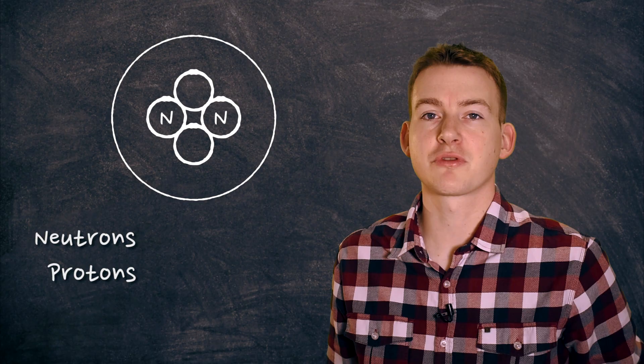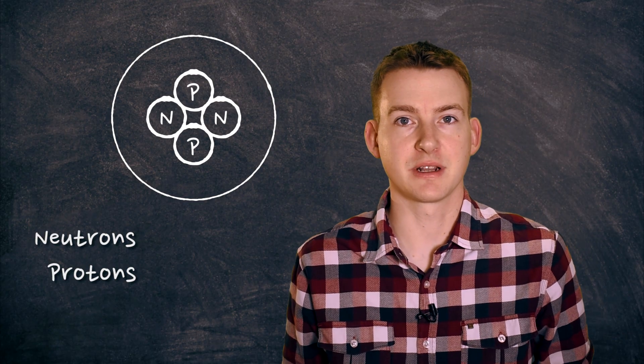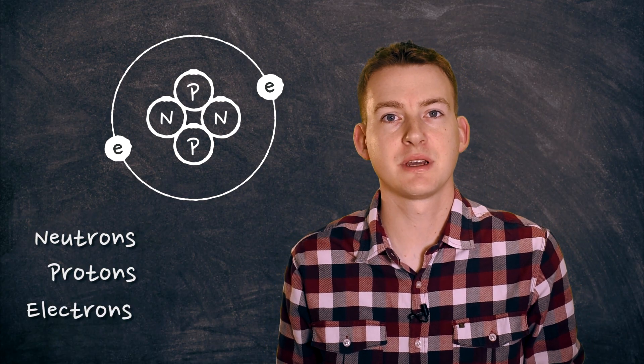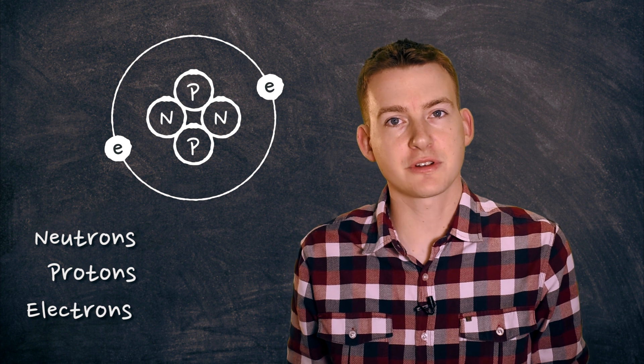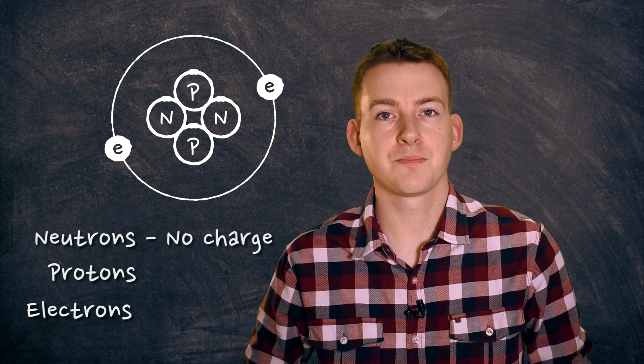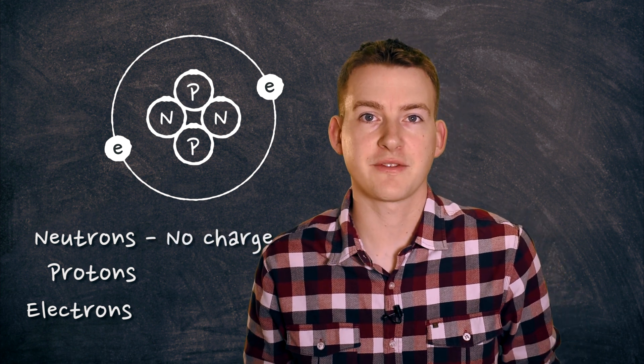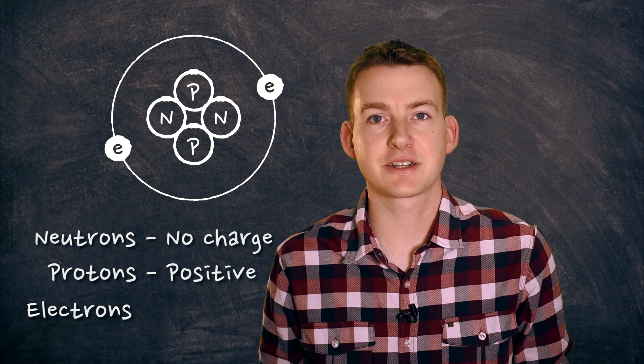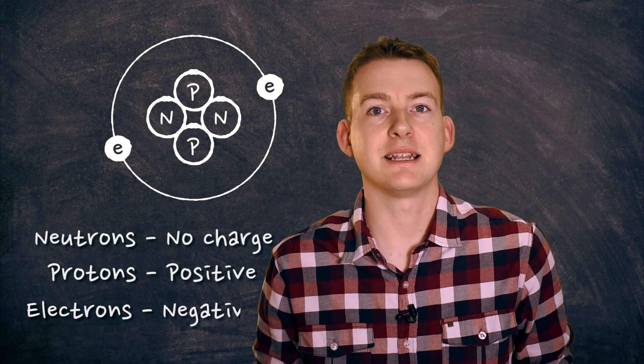To understand electricity we've got to know a little bit about atoms. Atoms are these tiny little particles that make up everything, and atoms have got neutrons and protons in the middle of them, and they've got electrons whizzing around the outside of them. Now the neutrons are neutral — they've got no charge. Protons however are positive and electrons are negative.